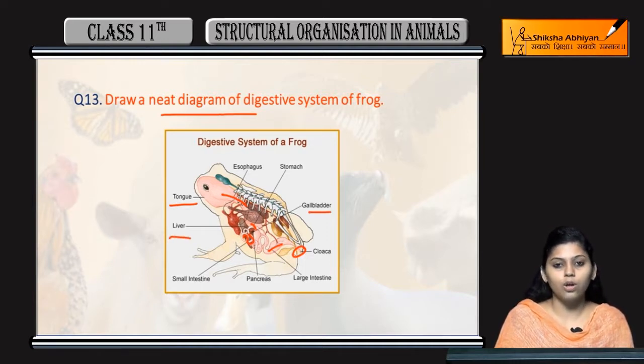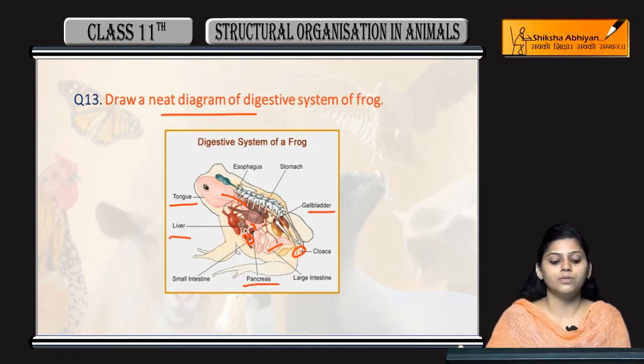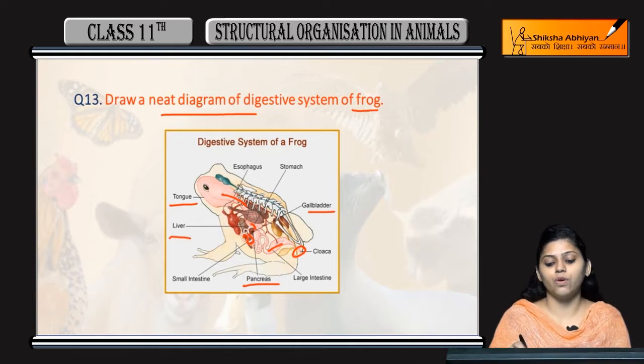The gallbladder and pancreas are also present. So this was about the digestive system of the frog.